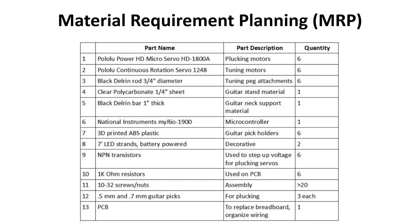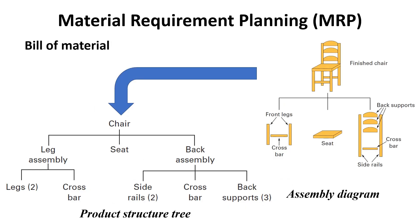The listing in the bill of materials is hierarchical. It shows the quantity of each item needed to complete one unit of its parent item. The nature of this aspect of a bill of materials is clear when you consider a product structure tree, which provides a visual depiction of the subassemblies and components needed to assemble a product. This figure shows an assembly diagram for a chair and a simple product structure tree for the chair.